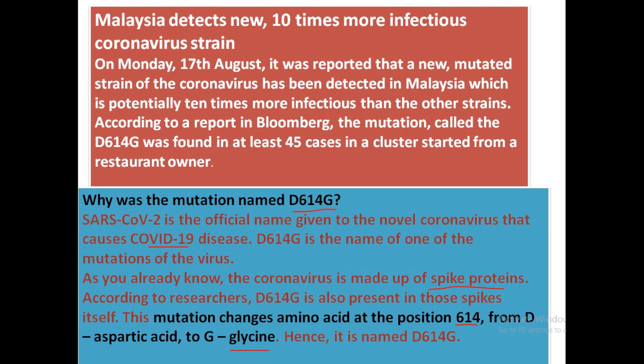Why was the mutation named D614G? SARS-CoV-2 is the official name of the novel coronavirus that causes COVID-19. D614G is the name of one of the mutations of the virus. As you know, the coronavirus is made up of spike proteins, and according to researchers, D614G is present in those spikes.